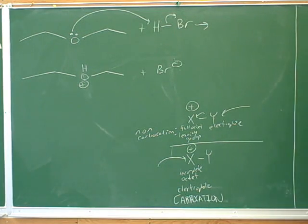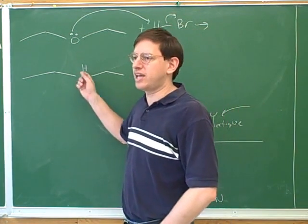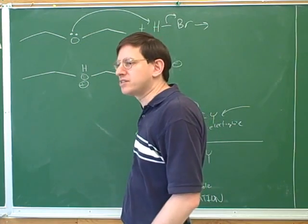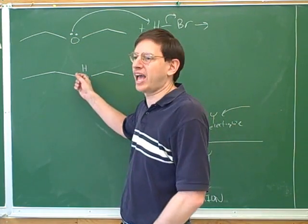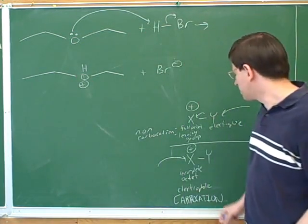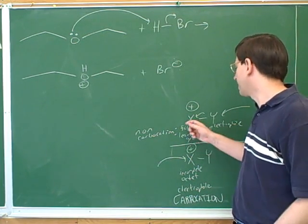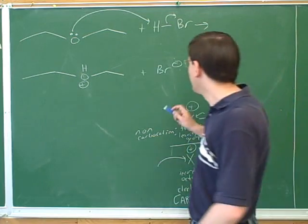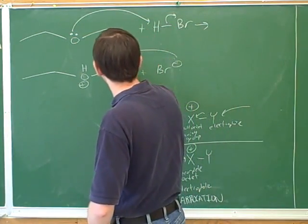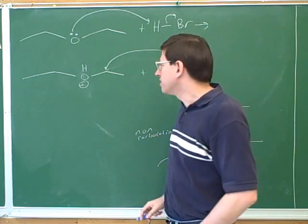The atom it's attached to. That's right. This has a complete octet, so it's the atom it's attached to that will be the electrophile. Or an easier way to see this is, this is not a carbocation. Well, we just learned that unless you have a carbocation, the positive charge doesn't make the atom into an electrophile. It makes the adjacent atom into the electrophile. So who is the bromine going to attack? The carbon, not the oxygen.